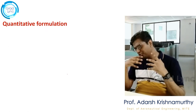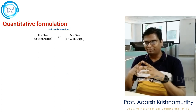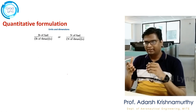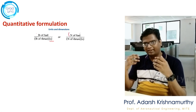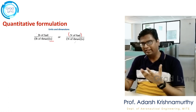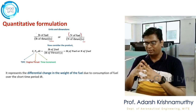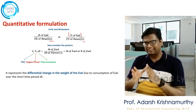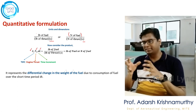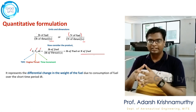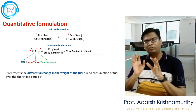Next, we will understand the units and dimensions of thrust specific fuel consumption. In SI units it is newtons of fuel per newton of thrust generated multiplied by time — or equivalently pounds of fuel per pound of thrust per second. To continue the analysis, I introduce a new product: TSFC (Ct) multiplied by the thrust available, multiplied by the time increment dt. This product gives the newtons of fuel consumed in time dt — representing the differential change in fuel weight due to consumption over a short period dt.